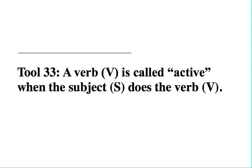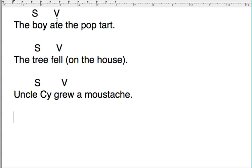Tool 33. A verb is called active when the subject does the verb. What does this mean? This means, in typical sentences, the subject is performing the action that the verb describes.